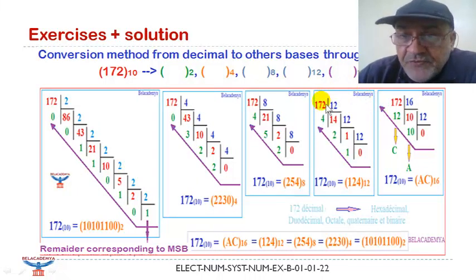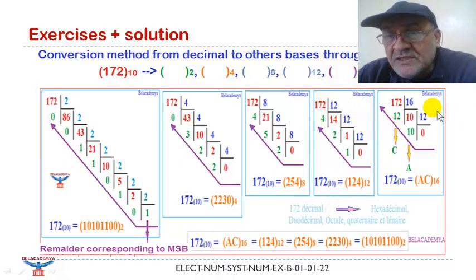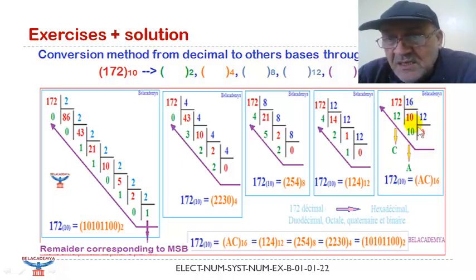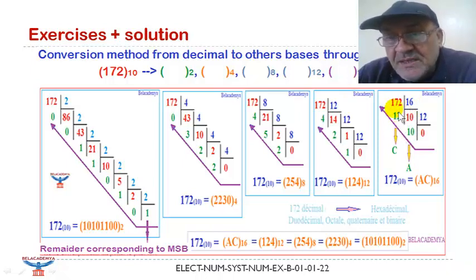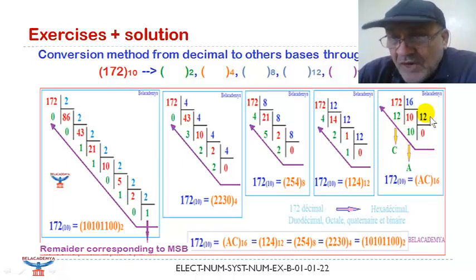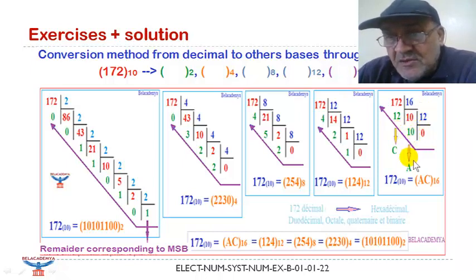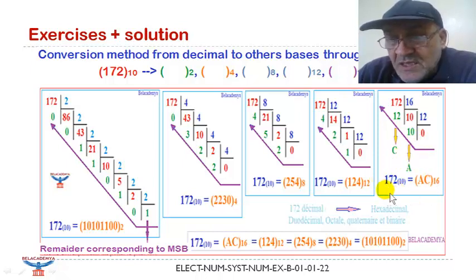For the hexadecimal conversion of 172: we divide by 16, which gives 10 with remainder 12. Since 12 is represented in hexadecimal by C, this is our first remainder. Then 10 divided by 16 gives 0 with remainder 10, and 10 is represented by A. The first remainder corresponds to the least significant digit and the second to the most significant, so 172 in base 10 equals AC in base 16.